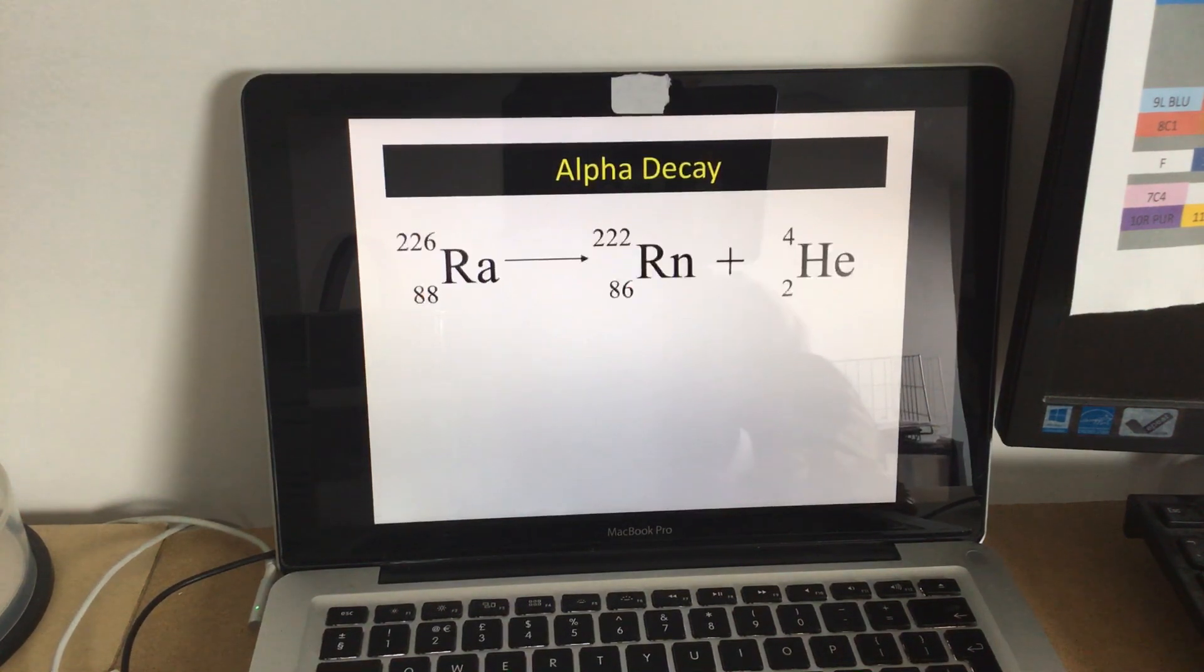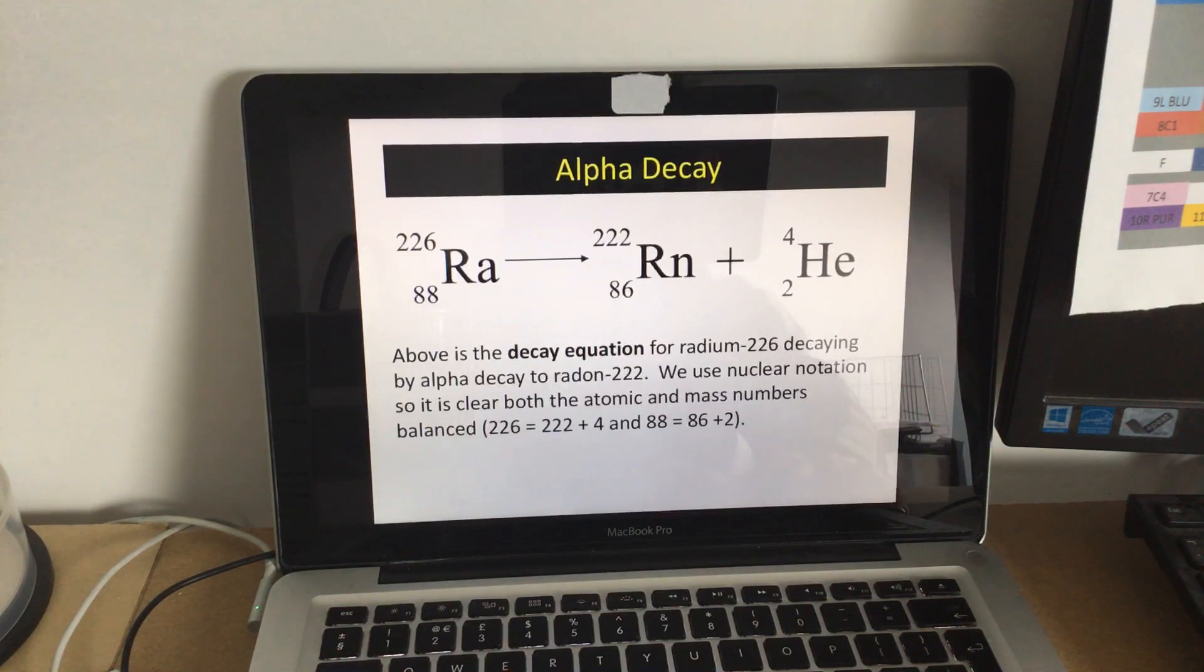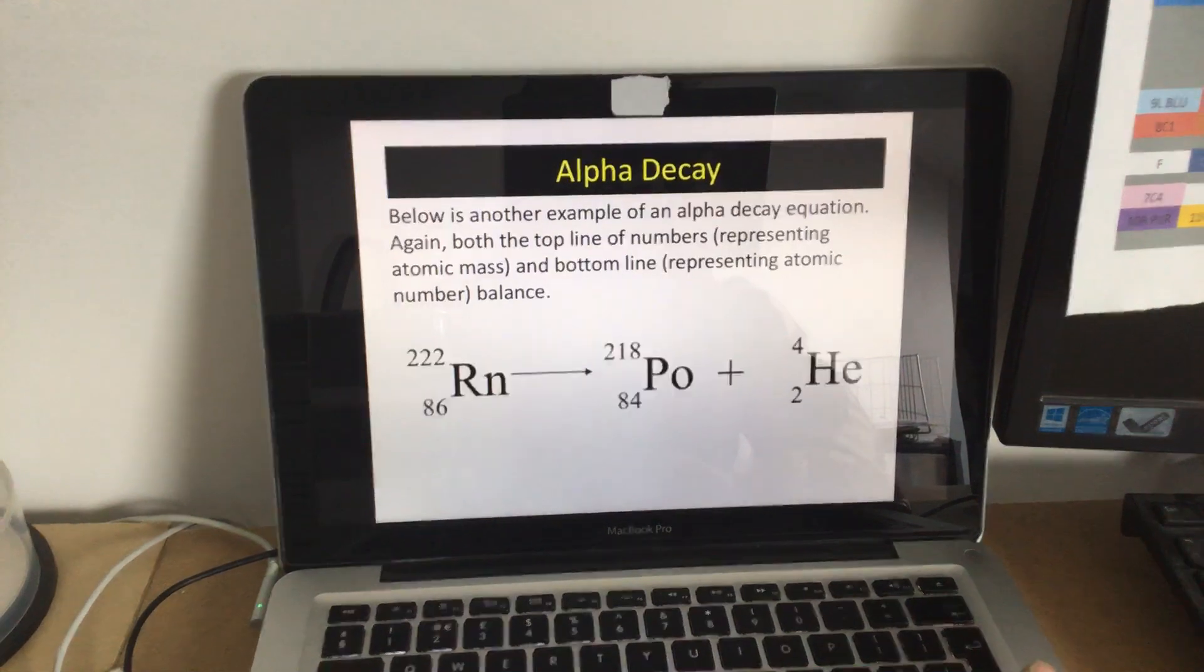And that's basically alpha, so there would be the equation. So we started off with radium, and we've gone down to radon plus a helium nucleus, or an alpha particle. Okay, this is in your PowerPoint.